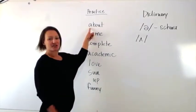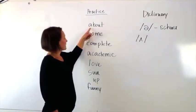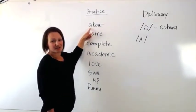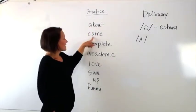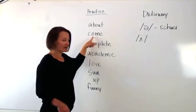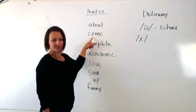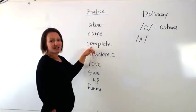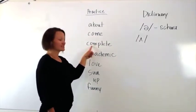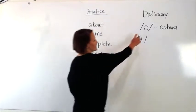For example, this is the word about. The sound uh is right here, spelled with an a. Come, like come here. Now that uh sound is spelled with an o. Again here, complete. This is the uh sound.